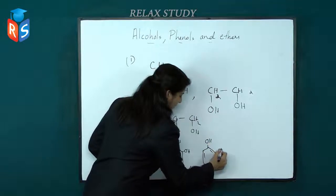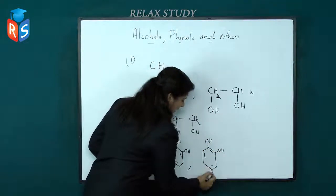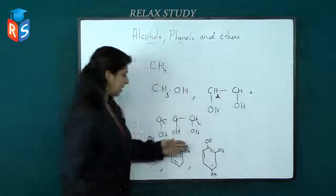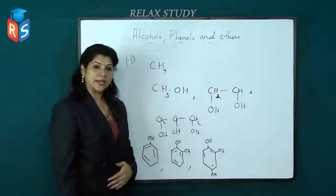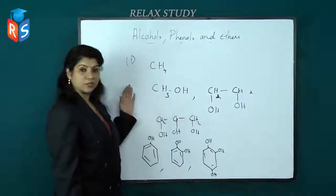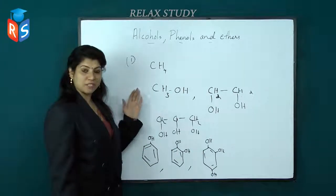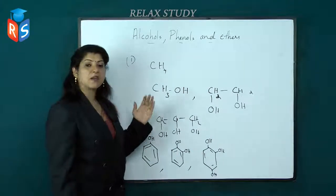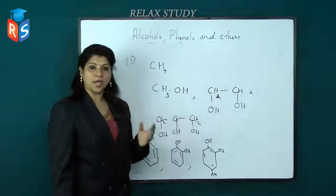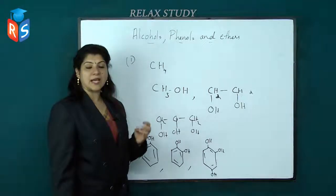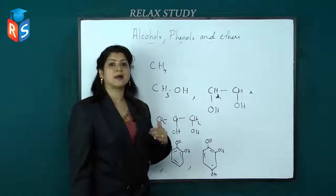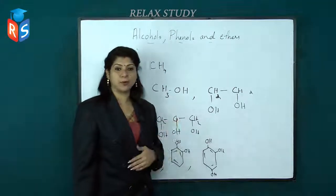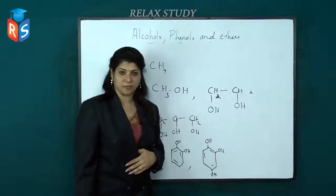If three hydrogen atoms get replaced by three OH groups, it is called trihydric. So this classification is based on monohydric, dihydric, and trihydric — that is, according to the number of OH groups.